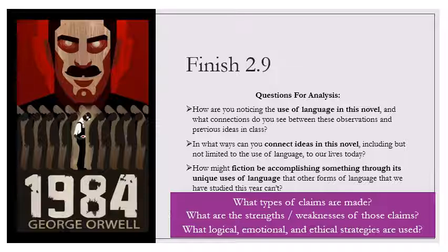Socialism, a theory which appeared in the early 19th century, was still deeply infected by the utopianism of past ages. But in each variant of socialism that appeared from about 1900 onwards, the aim of establishing liberty and equality was more and more openly abandoned. The new movements had the conscious aim of perpetuating unfreedom and inequality. These new movements grew out of the old ones but the purpose of all of them was to arrest progress and freeze history at a chosen moment. As usual, the high were to be turned out by the middle, but this time by conscious strategy the high would be able to maintain their position permanently.